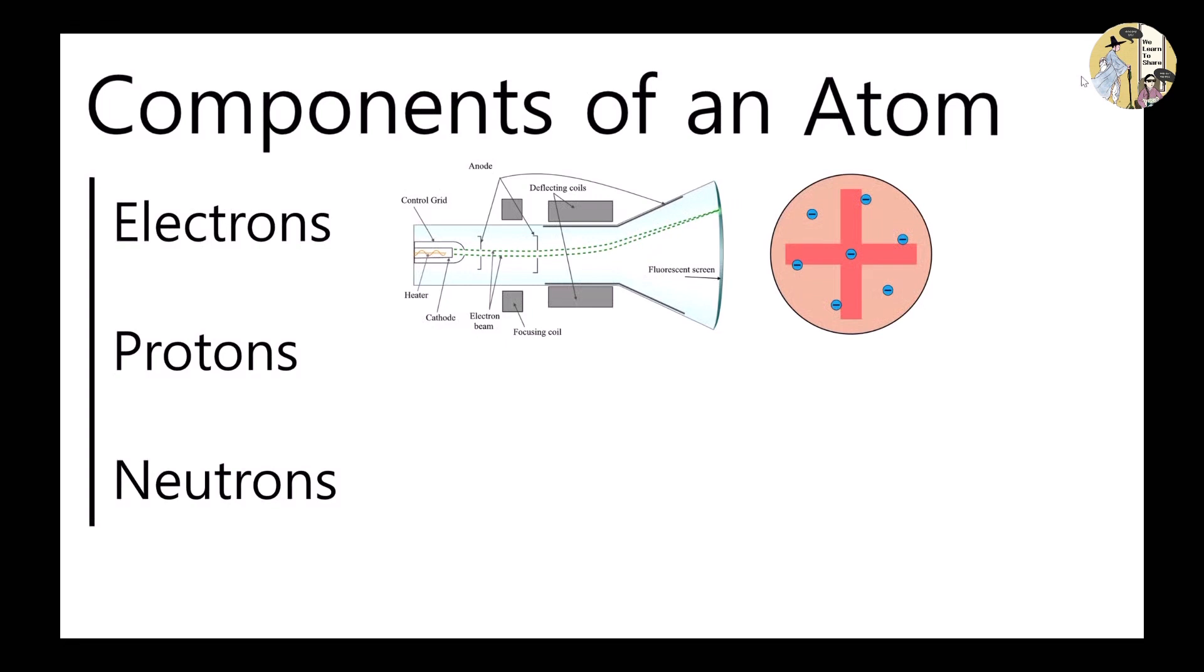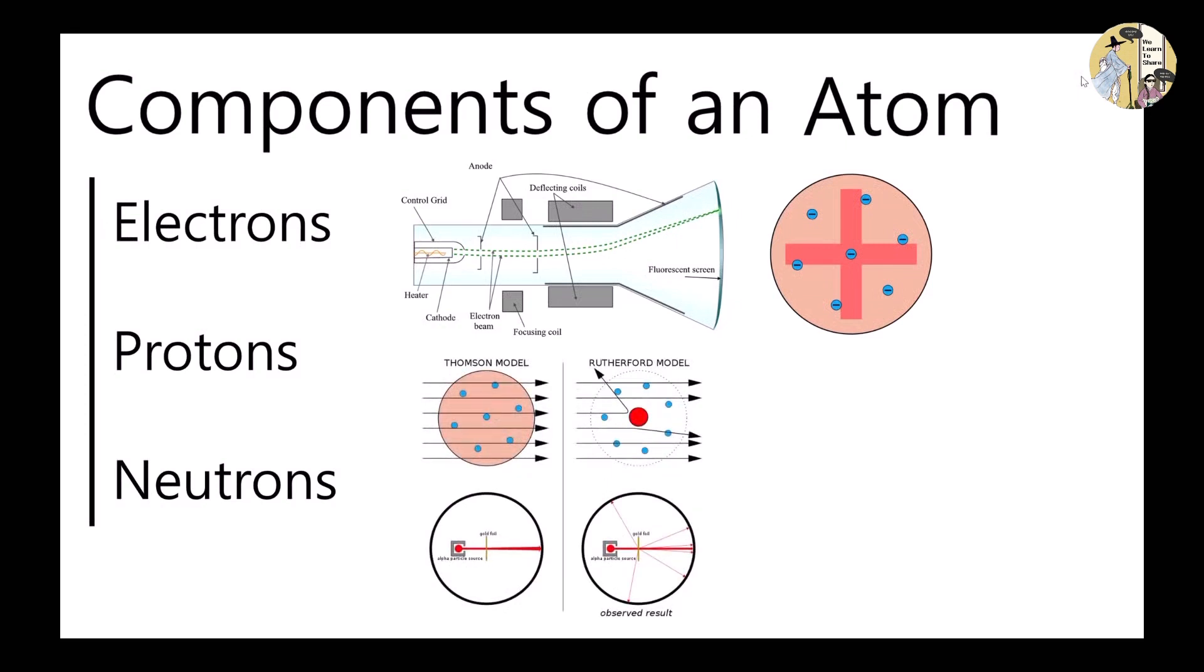However, this model did not last long. In 1911, Ernest Rutherford and his colleagues bombarded a piece of thin gold foil with alpha particles and were able to see particles scattering instead of going in one direction. By this experiment, he discovered that most of the atom is empty space, and all the positive charge and most of the mass are concentrated in the nucleus.